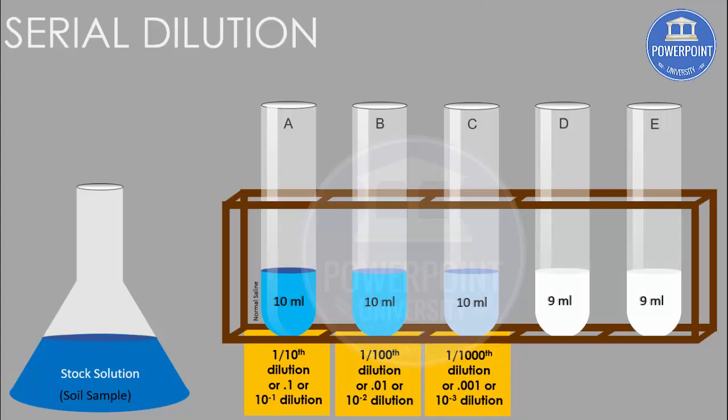So again, I'm going to put from C to D. This also becomes 10 ml, or 10 to the power of minus five dilution.